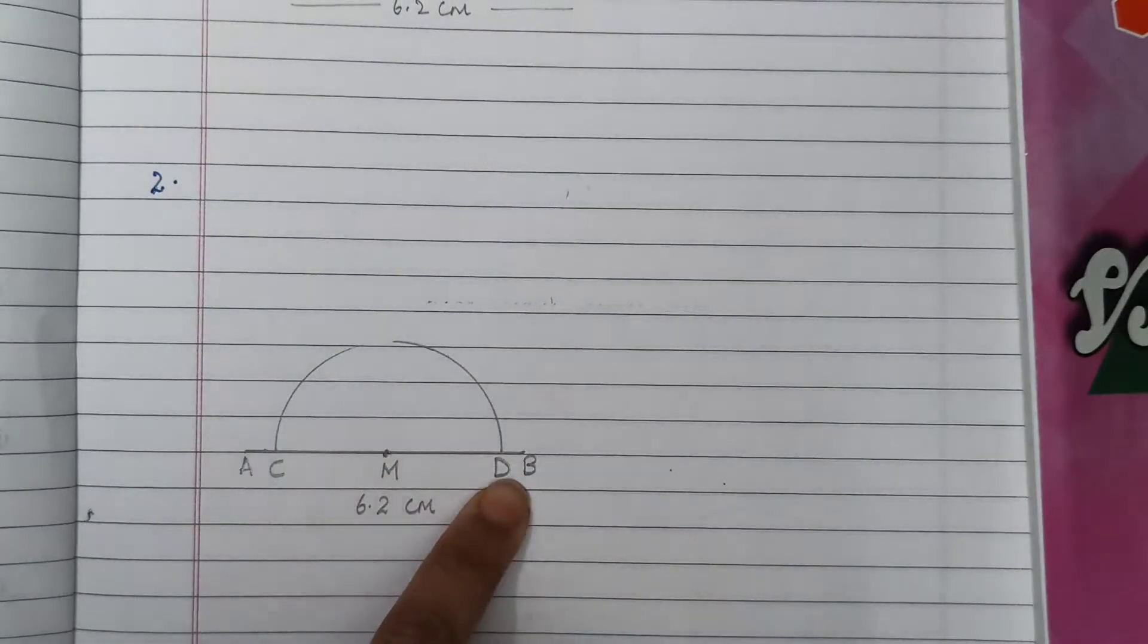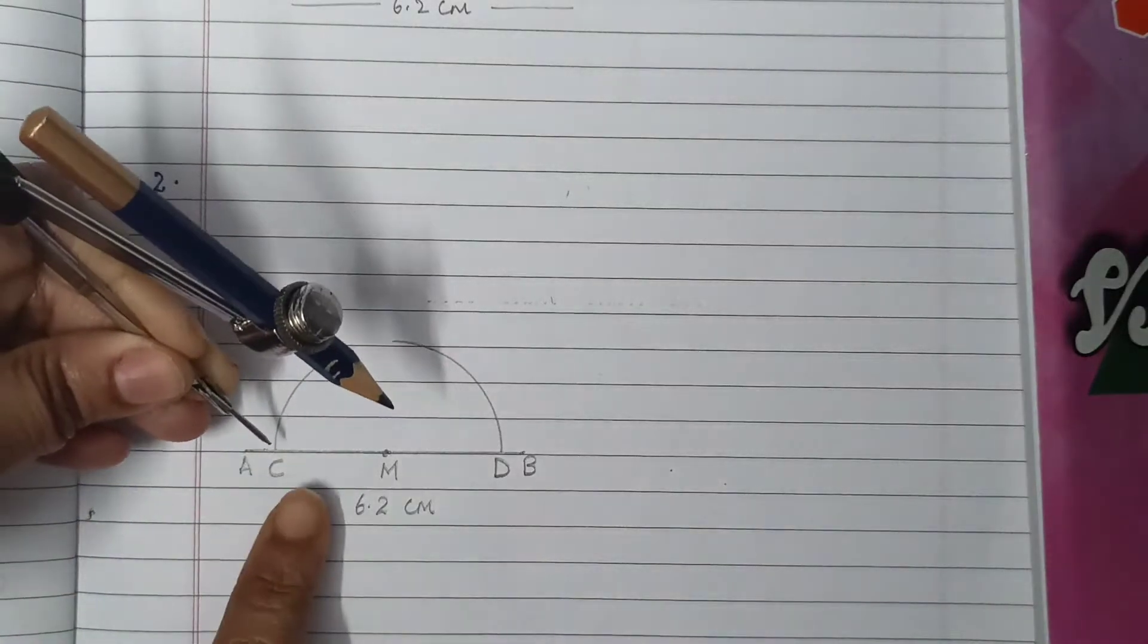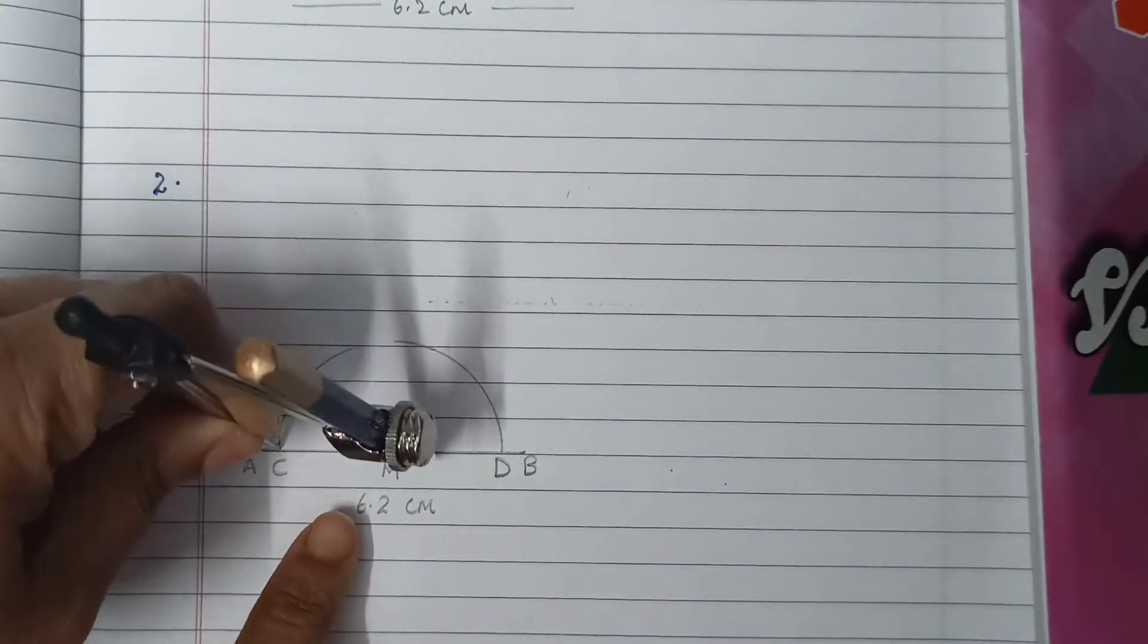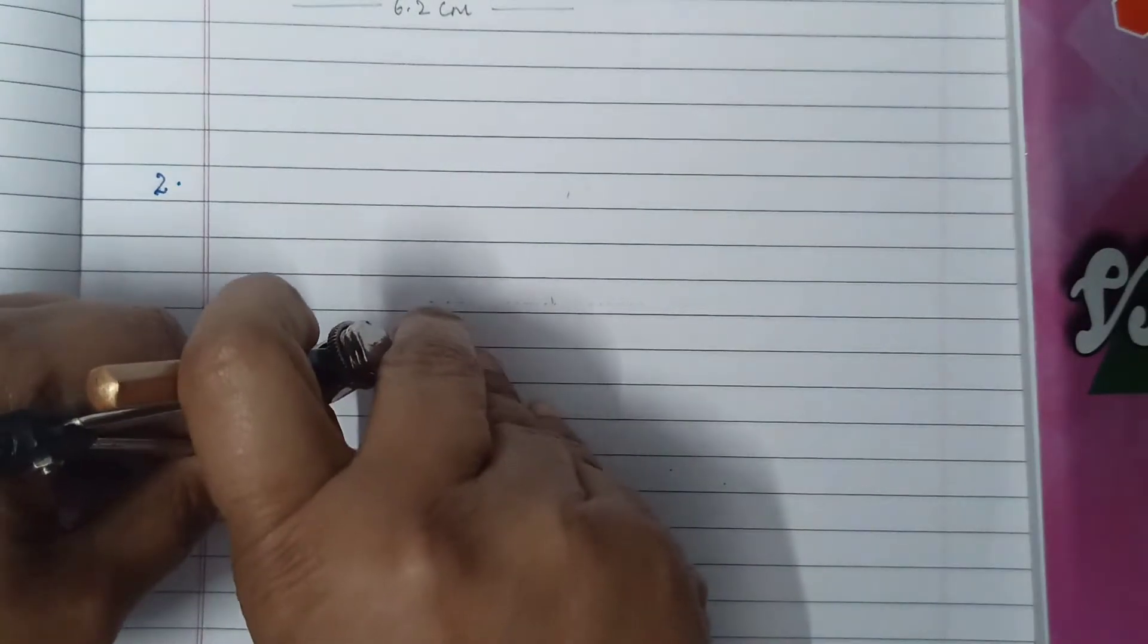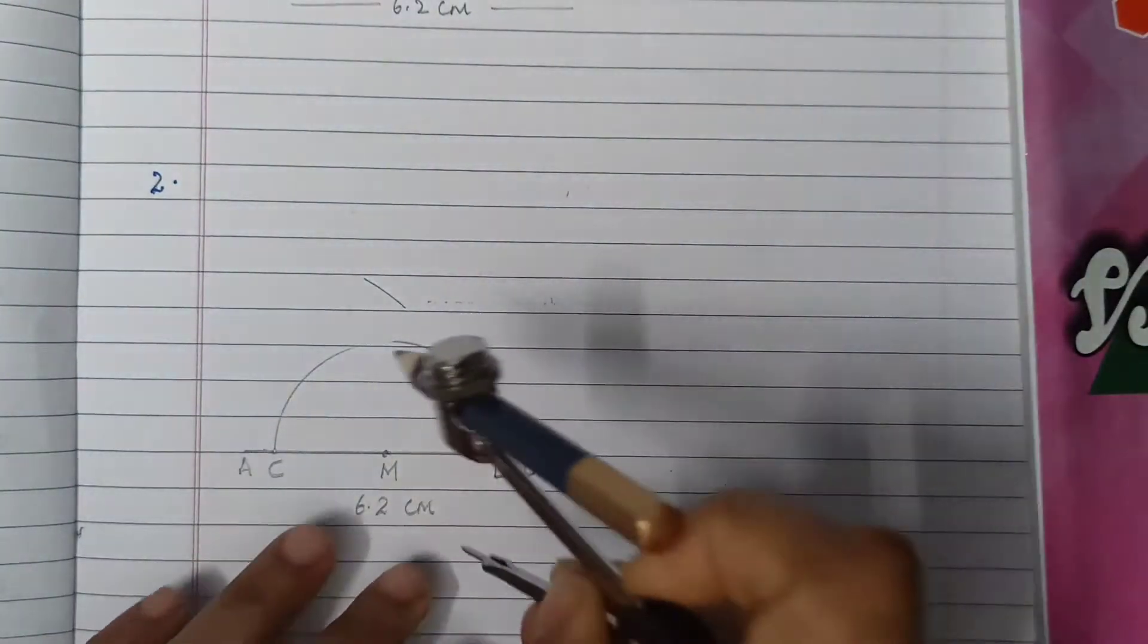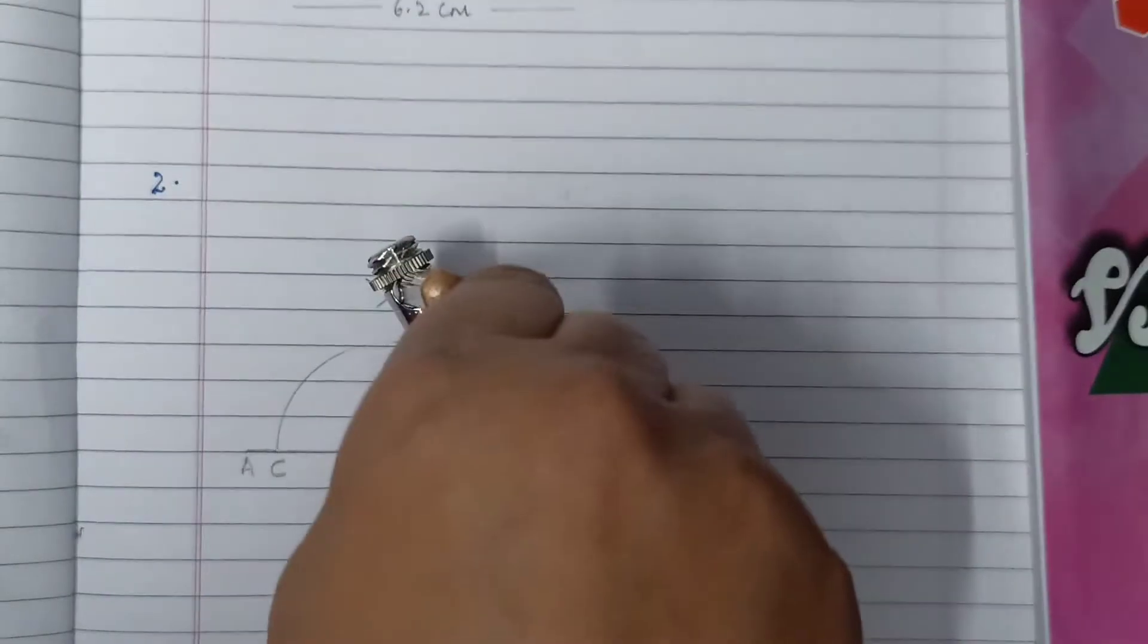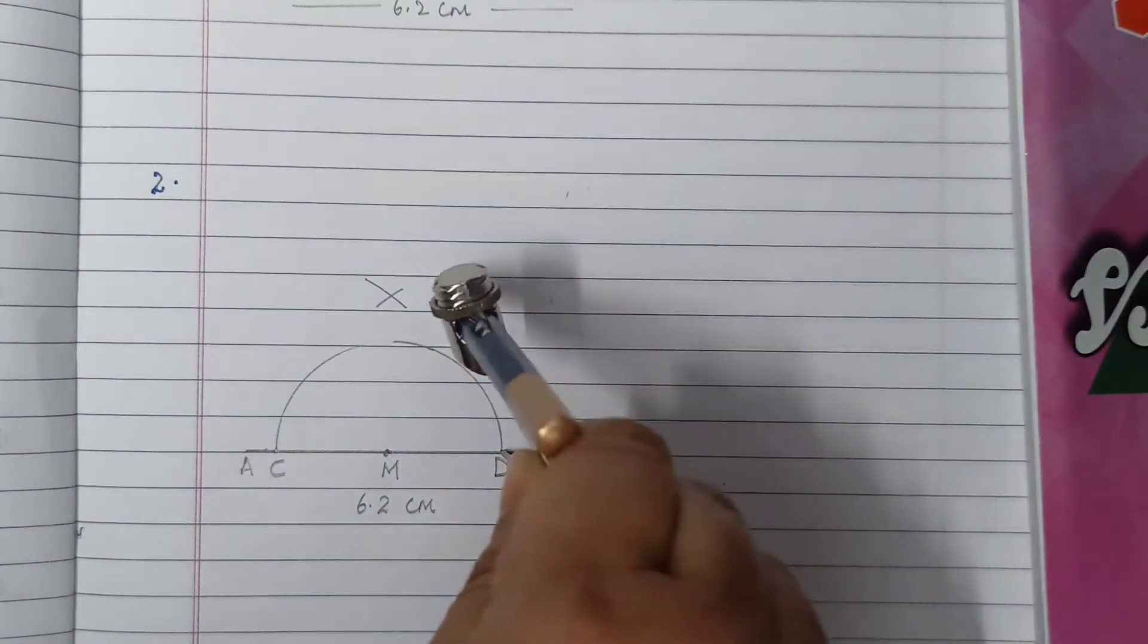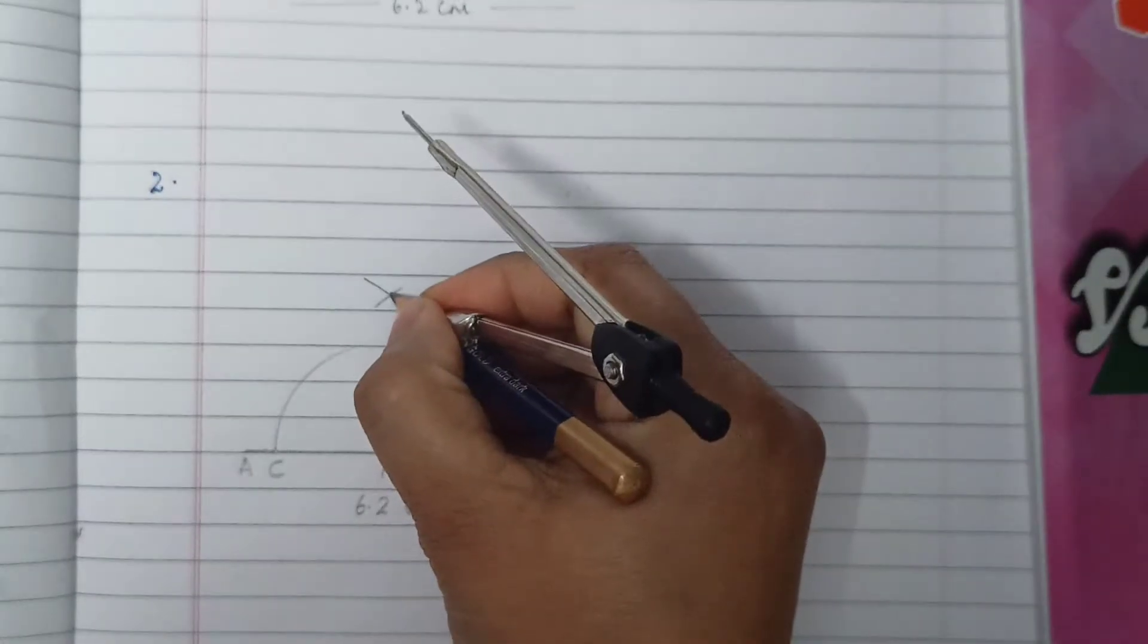First we will take C as center and the length of the radius would be more than half of CD. Both the arcs will cut each other at point Q. This is point Q.